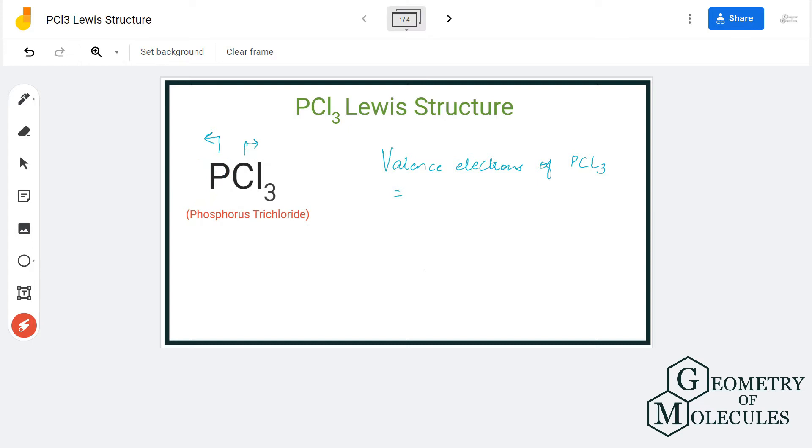To understand its Lewis structure, we'll first look at the total number of valence electrons for this molecule. Phosphorus has five valence electrons in its outer shell, and chlorine has seven valence electrons. Since there are three chlorine atoms, we multiply by three. In total, we have 26 valence electrons for PCl3.